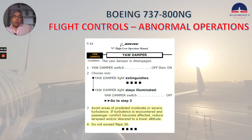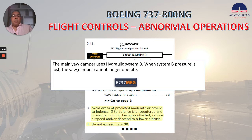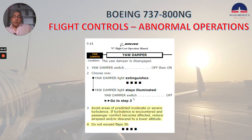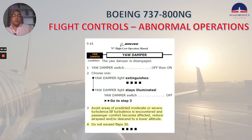Yaw damper non-normal checklist: the MRG says the main yaw damper uses hydraulic system B. When system B pressure is lost, the yaw damper can no longer operate. In this checklist: yaw damper switch off, then on. If the light extinguishes, that's the end of the checklist. If the yaw damper light stays illuminated, yaw damper switch off. Go to step three, which says: avoid areas of predicted moderate or severe turbulence. If turbulence is encountered and passenger comfort becomes affected, reduce airspeed and/or descend to a lower altitude. Do not exceed flap speed.